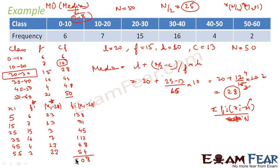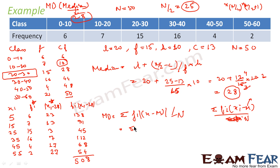Applying the formula: Mean deviation about median = sigma fi × |xi − m| / n = 508 / 50 = 10.16. So the mean deviation about the median for this dataset is 10.16.